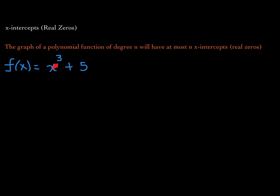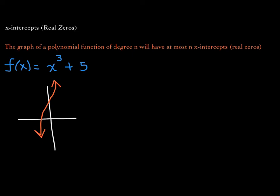For example, this cubic function is a polynomial function — the leading coefficient is 1, the constant term is 5, and the degree 3 is a whole number. Since the degree is 3, this function will have, at most, 3 x-intercepts or 3 real zeros. It could have only 1 — that's possible. Looking at the graph of f, there is only 1 x-intercept, 1 real zero, but the rule states it can have at most 3.